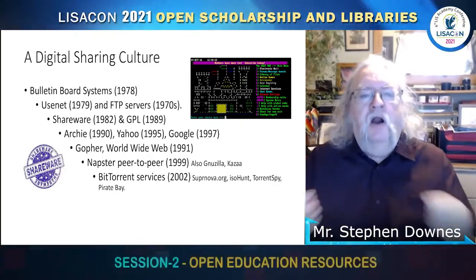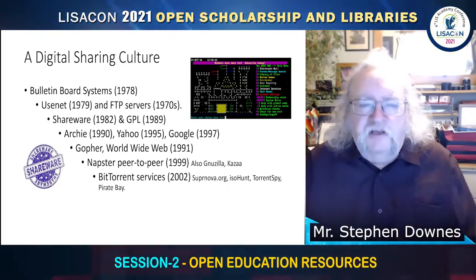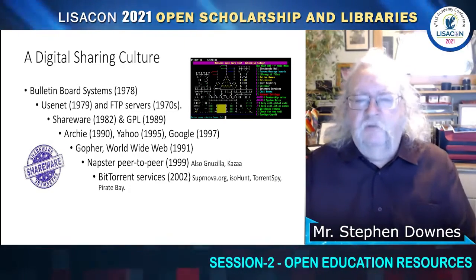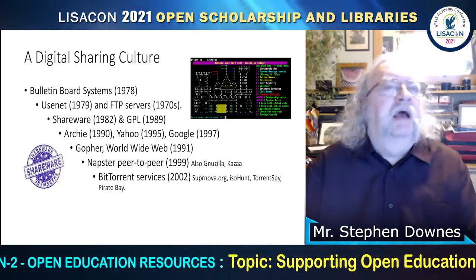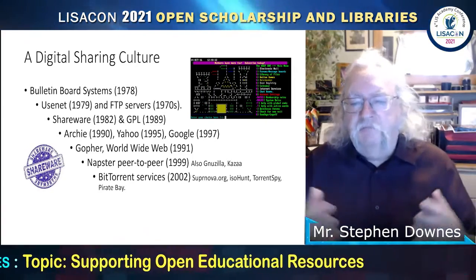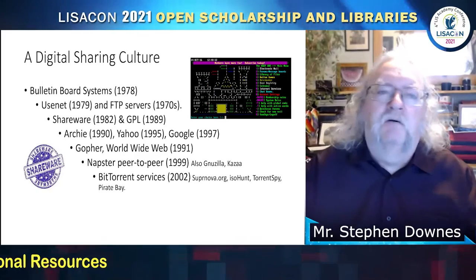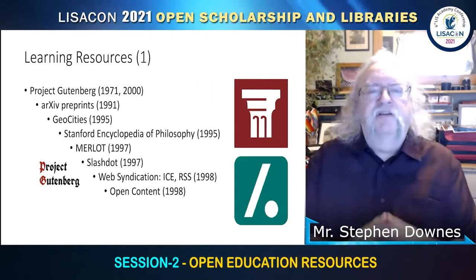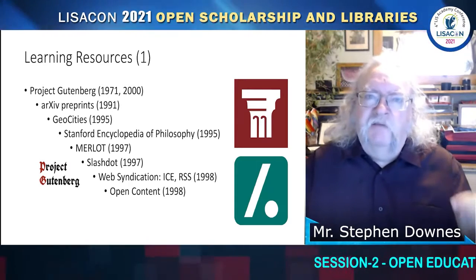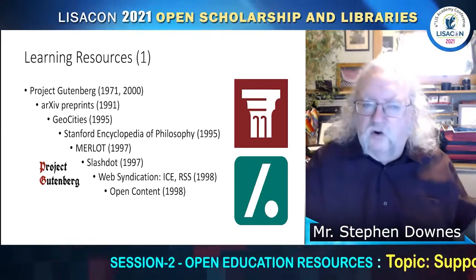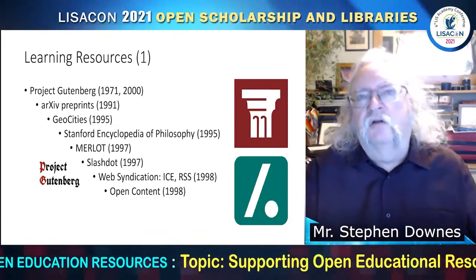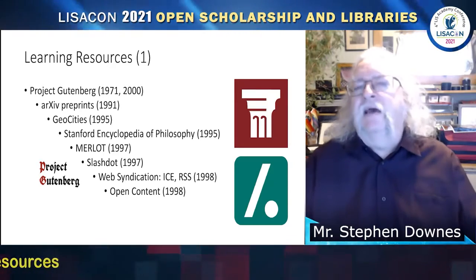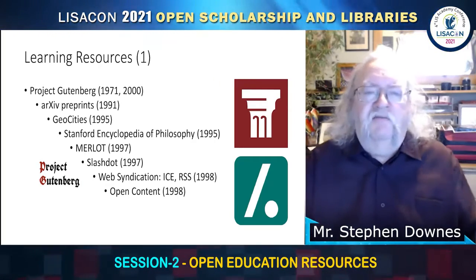For search we had Archie, Yahoo, and Google, which came along in 1997. For document storage we had Gopher, and then Tim Berners-Lee introduced the World Wide Web beginning in 1991. File sharing became a big thing — there was Napster and BitTorrent services starting in 2002, and the race to share was on. A lot of people credit MIT's OpenCourseWare as starting open educational resources, but we were sharing resources long before then. Project Gutenberg, which makes open access versions of thousands of key texts, began in 1971.